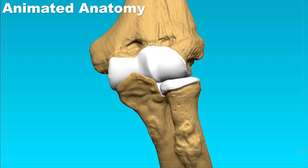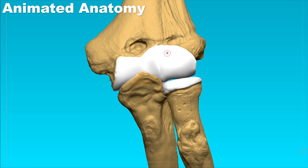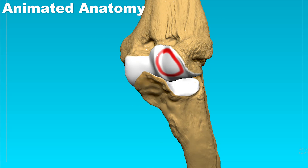We can see the humerus articulating with the radius. This is the capitulum of the humerus, while this is the head of the radius. The head has a circumference which also articulates with the ulna, doing so by articulating with the radial notch of the ulna.